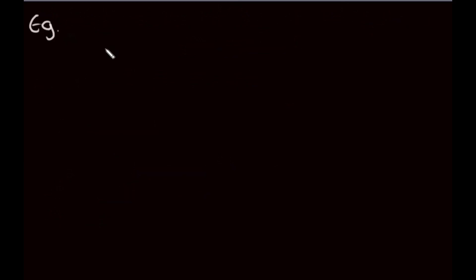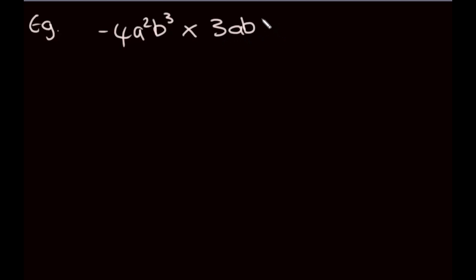Looking at an example now: we're given negative 4a squared b cubed times 3ab squared. The way I like to break this up is to look at the coefficients first. So negative 4 times 3 — it's a negative times a positive, so we're going to get a negative. We get negative 12.